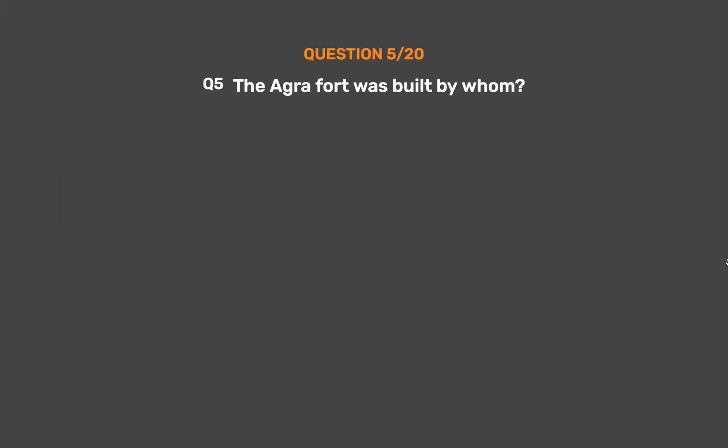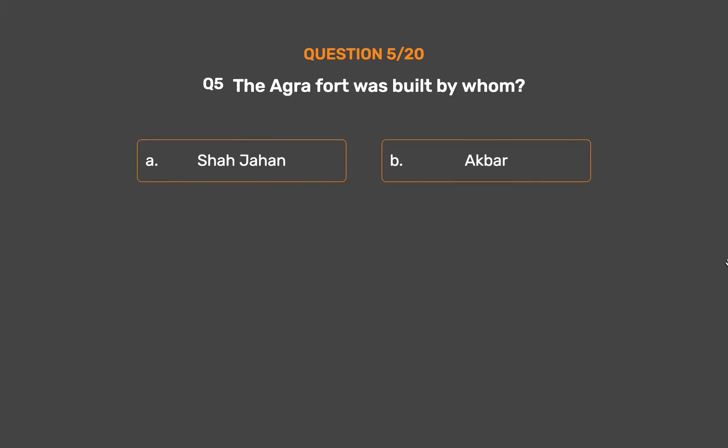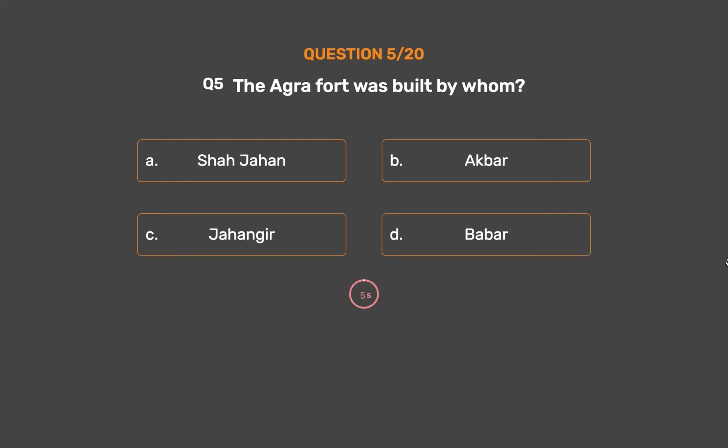Question No. 5: The Agra Fort was built by whom? Option A: Shah Jahan. Option B: Akbar. Option C: Jahangir. Option D: Babur.